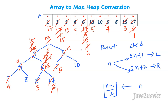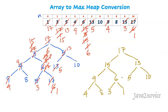We have completed all iterations and the heapification process. I will redraw the tree clearly. This binary tree is now strictly following max heap properties. I hope you understood how to convert an array into a max heap.